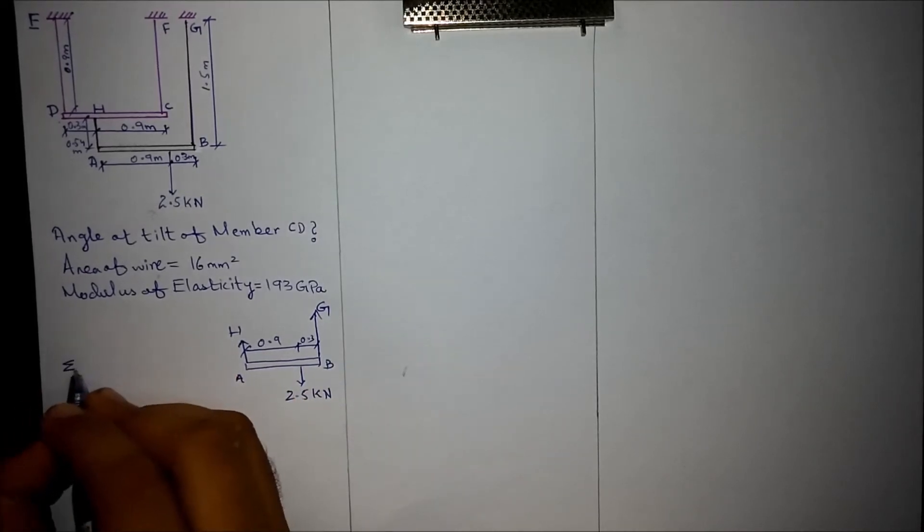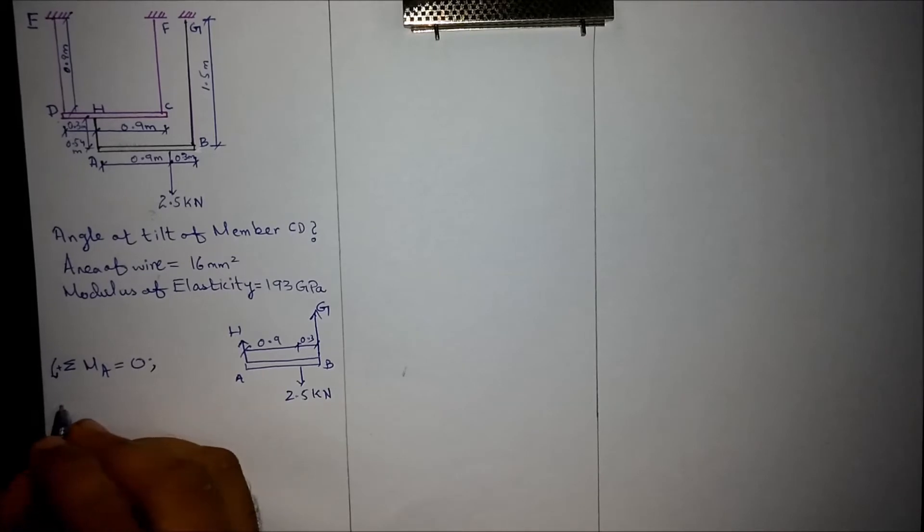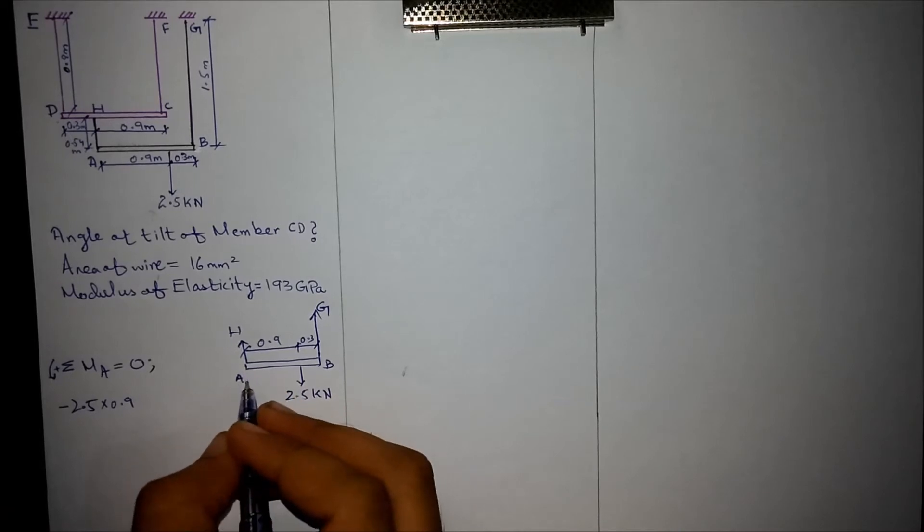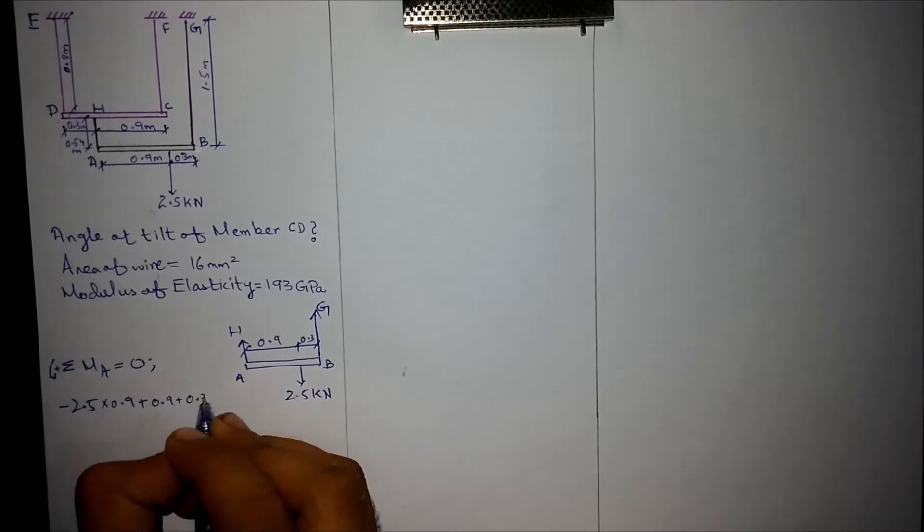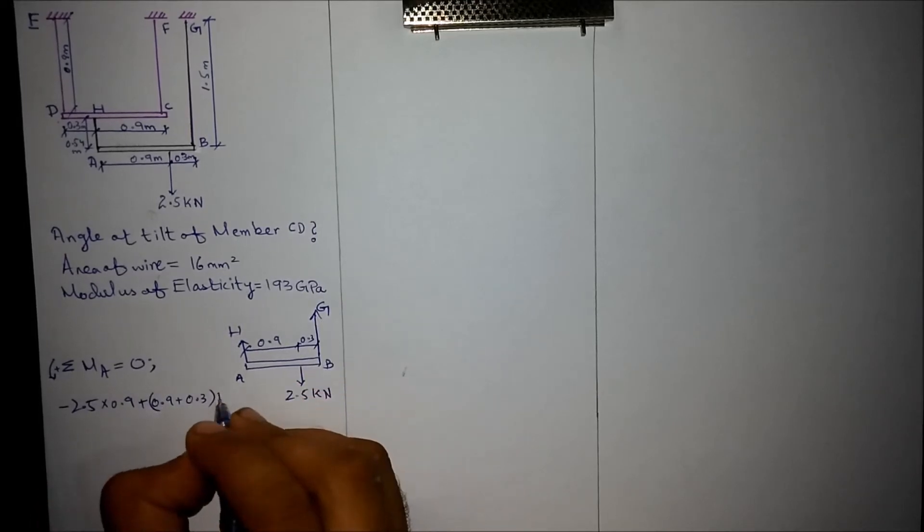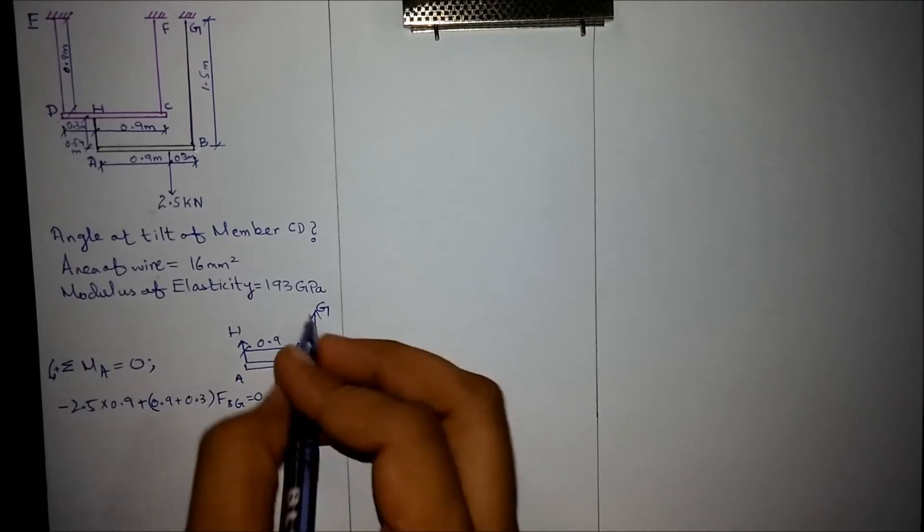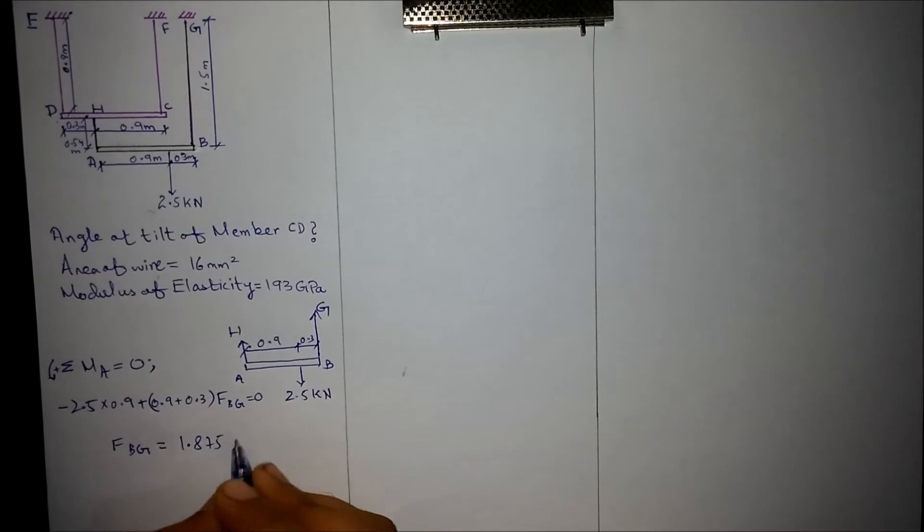Applying the summation of moments about point A. The moment from the 2.5 kN force at 0.3 meters is negative since 2.5 is rotating in clockwise direction, plus 0.9 times 0.3 into FBG is equal to zero. The force in this member is FBG. So FBG comes out to be 1.875 kN.